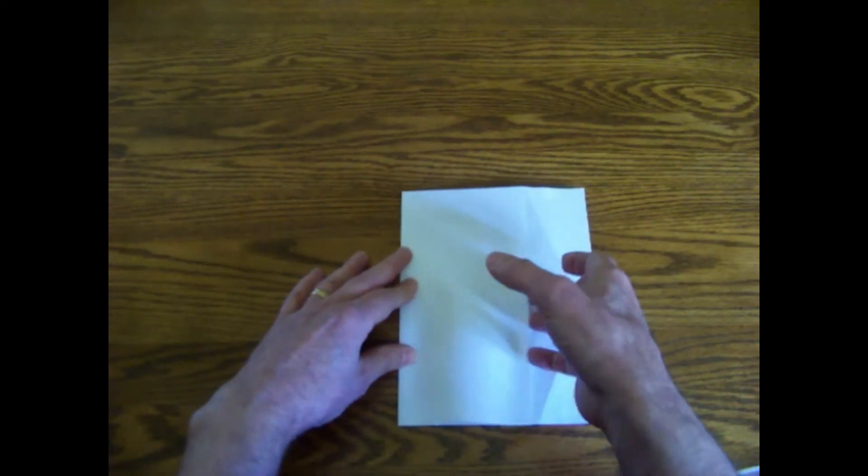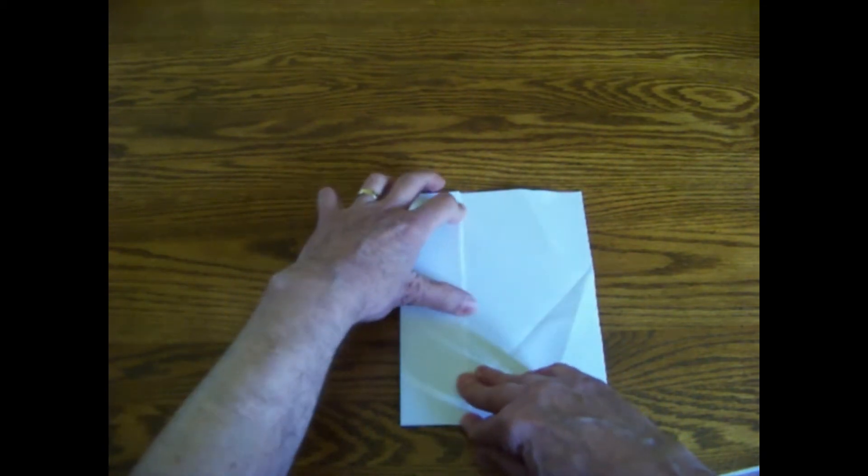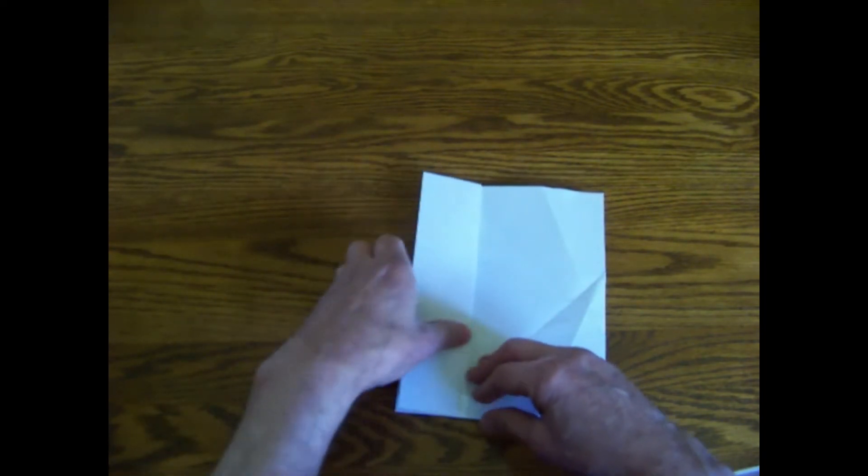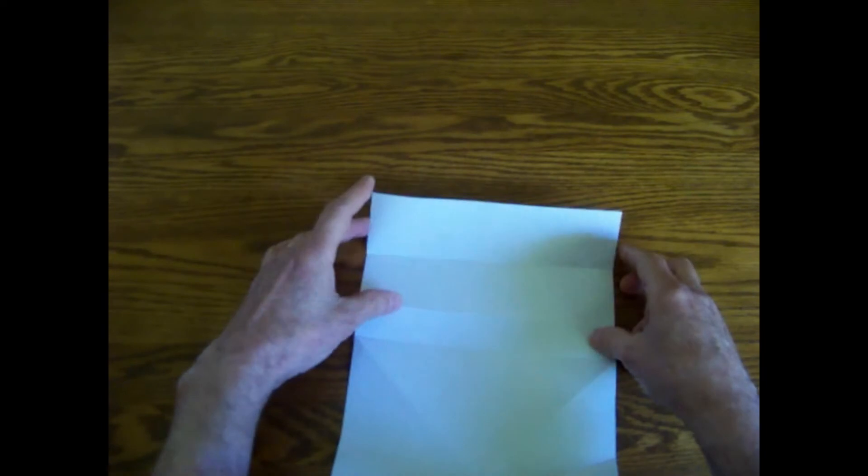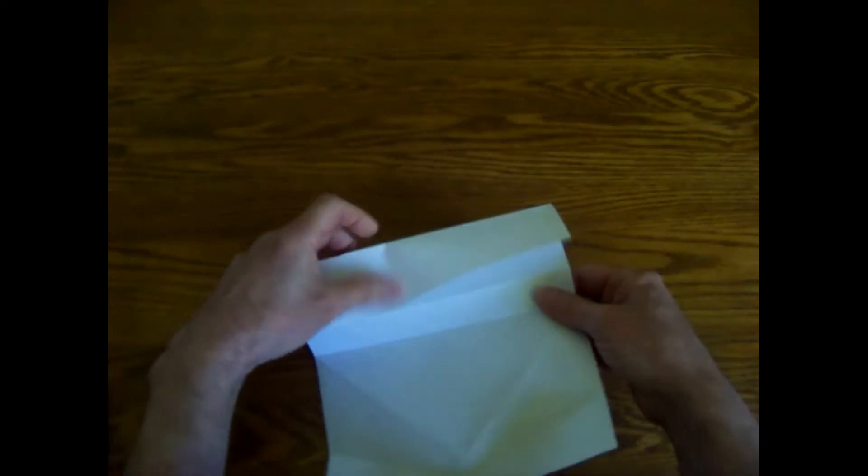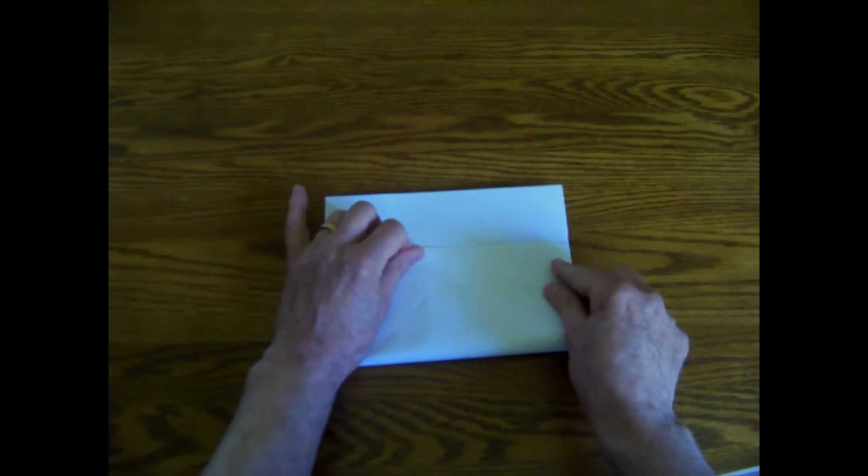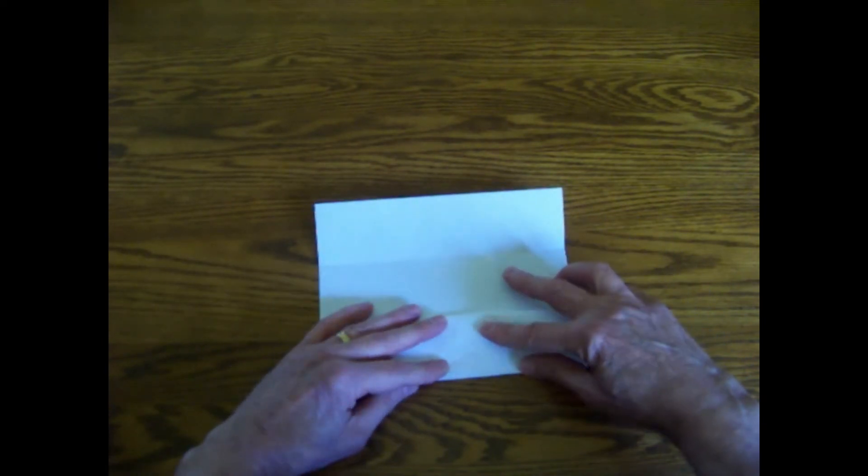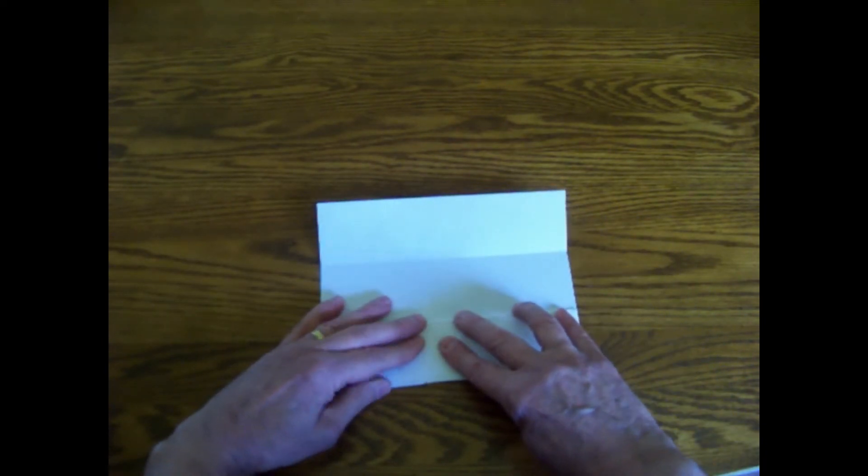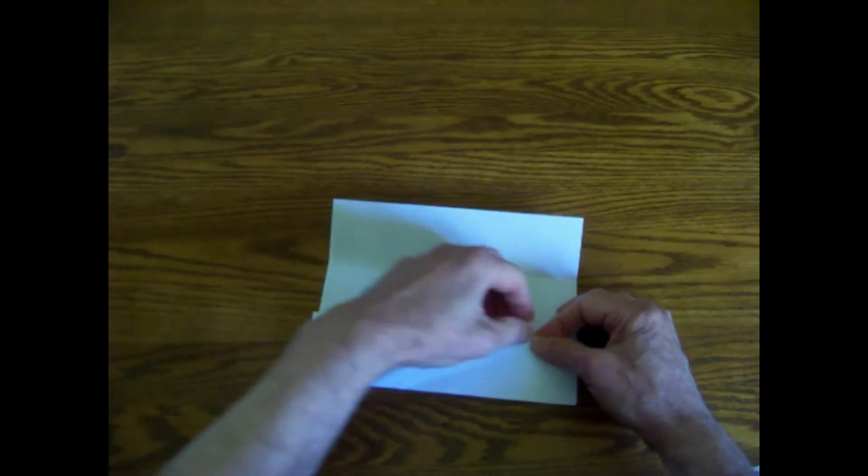If I fold this line back to meet that line, I have one fifth. So I have one fifth. There's another fifth, there's another fifth. If I fold this up to meet that, I have two fifths. Fold back. I have one fifth. And I have divided my sheet of paper into fifths.